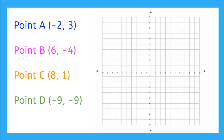I have four sets of ordered pairs. I'm going to plot the four points all on my coordinate grid right here. Let's start with point A. It says negative 2 comma 3. So this first one is my x, so I need to find negative 2 on my x-axis. And then I have positive 3 on my y-axis, so I can go up 1, 2, 3. And that is point A.